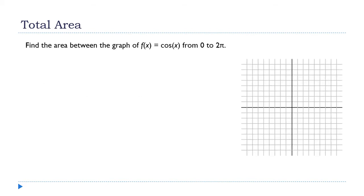Let's see how this works. I want to find the area between cosine of x and the x-axis from 0 to 2π — that's a full period of the cosine function, so we know it will be negative somewhere. To make it easy to see, I'll exaggerate the scale on the x-axis. Cosine starts at 1, and it's going to be 0 when it gets to π/2.